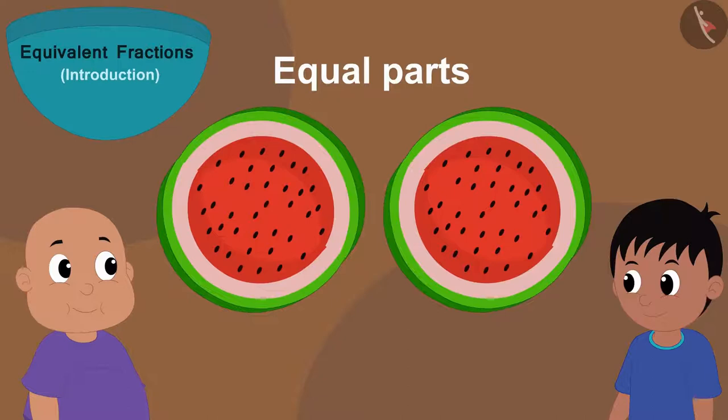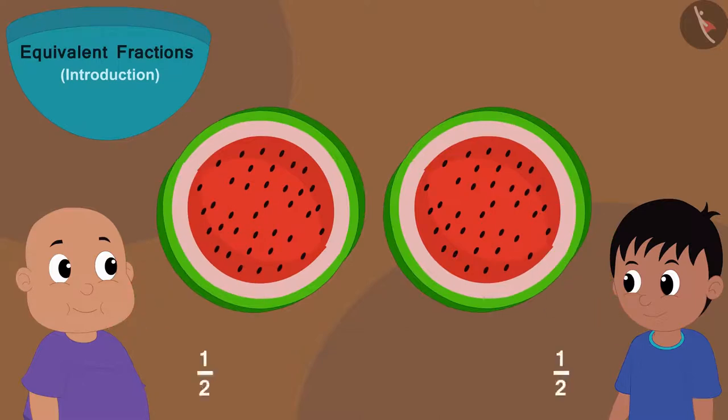There are two equal parts of watermelon here and both Raju and Bablu have taken a part of it. So we can say that both Raju and Bablu got one by two or half of the watermelon.